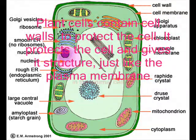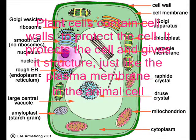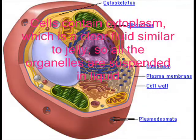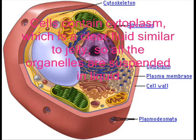Plant cells contain the cell walls to protect the cell. It protects the cell and gives it structure, just like the plasma membrane in the animal cell. Cells contain cytoplasm, which is a clear fluid similar to jelly, so all the organelles are suspended in liquid.